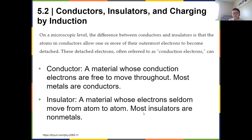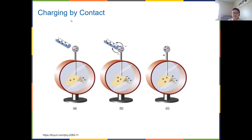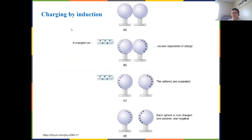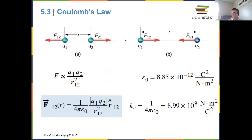We also talked about conductors and insulators and the differences between the two. For conductors, electrons are free to move throughout the material; for insulators, they are not. We talked about two methods of charging an object: charging by contact and charging by induction, which means non-contact.